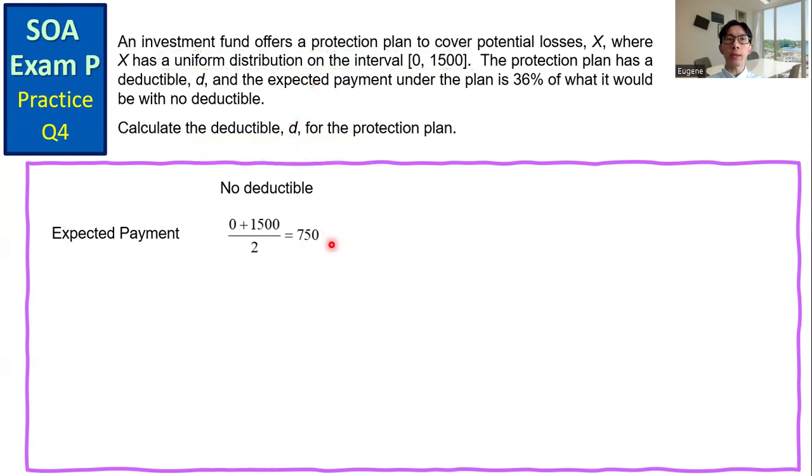For the protection plan with deductible D, define Y as the payment. Because of the deductible, if the loss is less than D dollars, the payment is 0. If the loss is between D and 1500 dollars, the payment is X minus D.